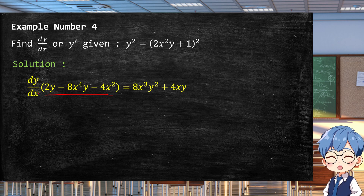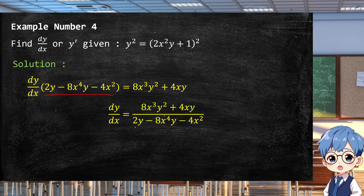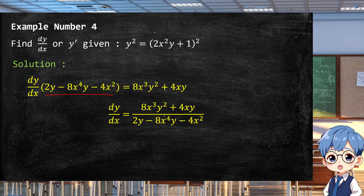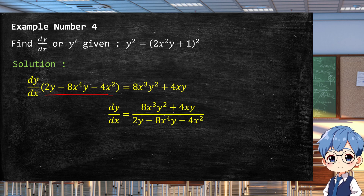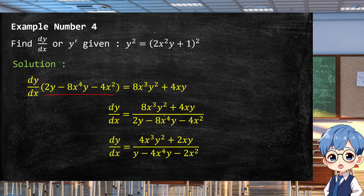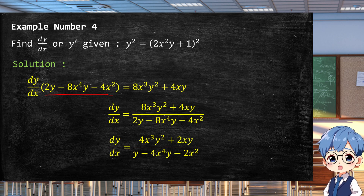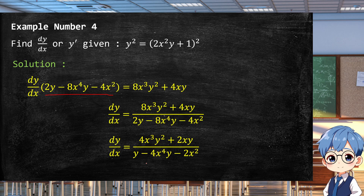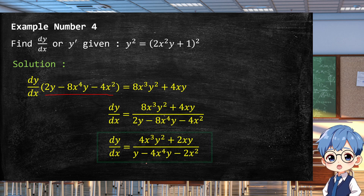Factoring out dy/dx gives the grouped terms. We isolate dy/dx by dividing both sides by (2y − 8x⁴y − 4x²). Then, since numerator and denominator share a common factor of 2, we divide through to get the final answer: dy/dx = (4x³y² + 2xy) / (y − 4x⁴y − 2x²).